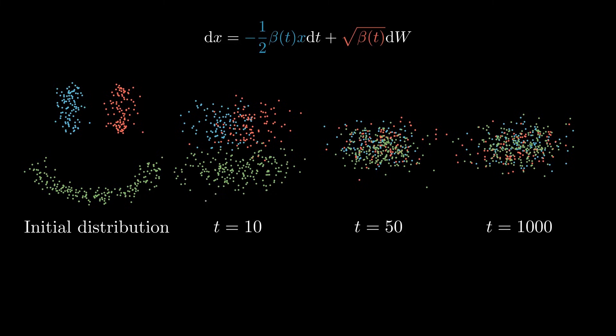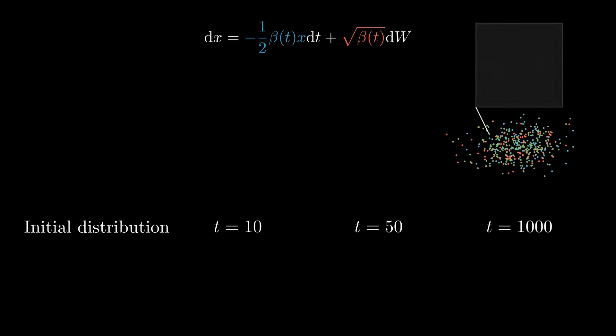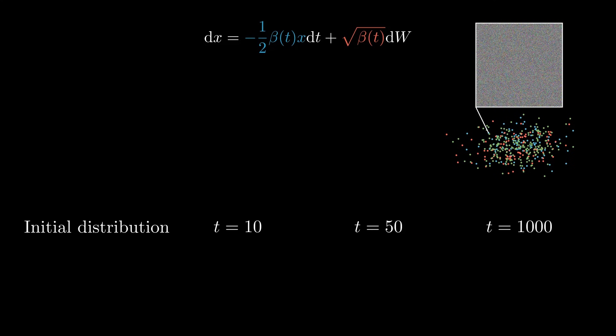But how does this relate to image generation? Well, imagine that each point here represents an image. After all, images are just vectors in a high-dimensional space. Then this SDE is effectively converting a complex distribution of images into a simple Gaussian one, containing only images filled with Gaussian noise.